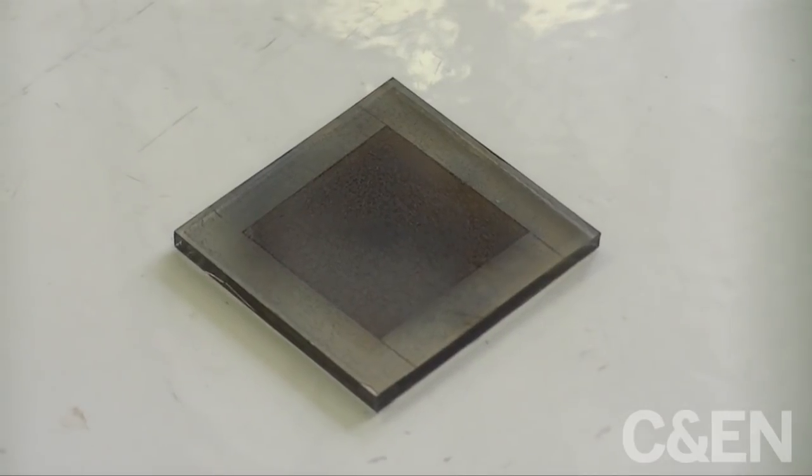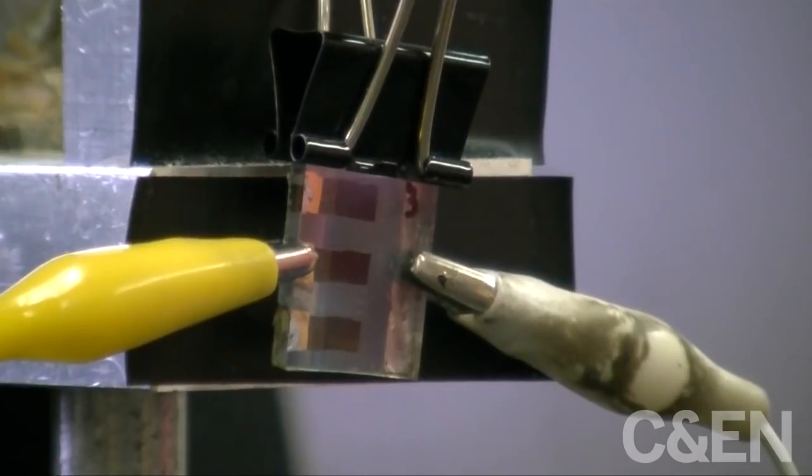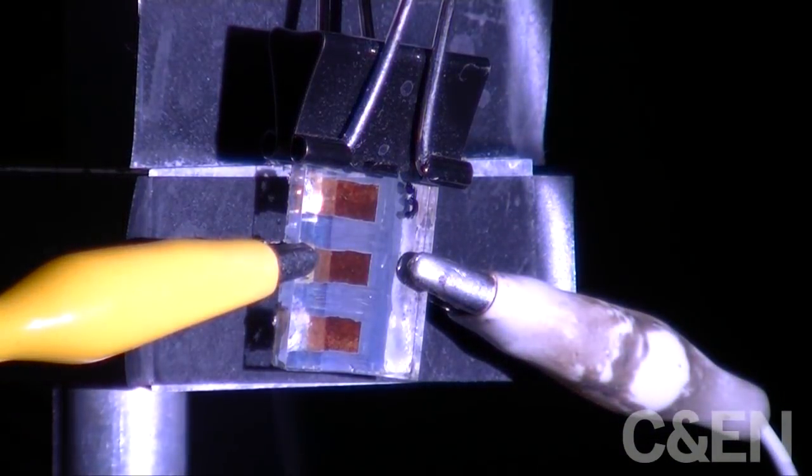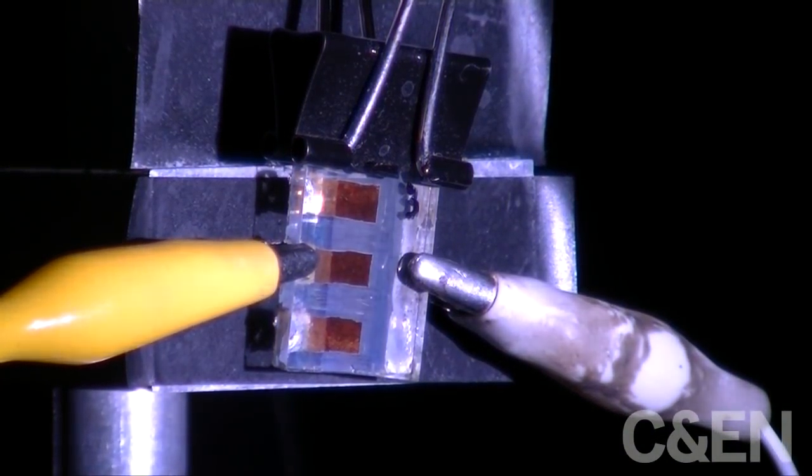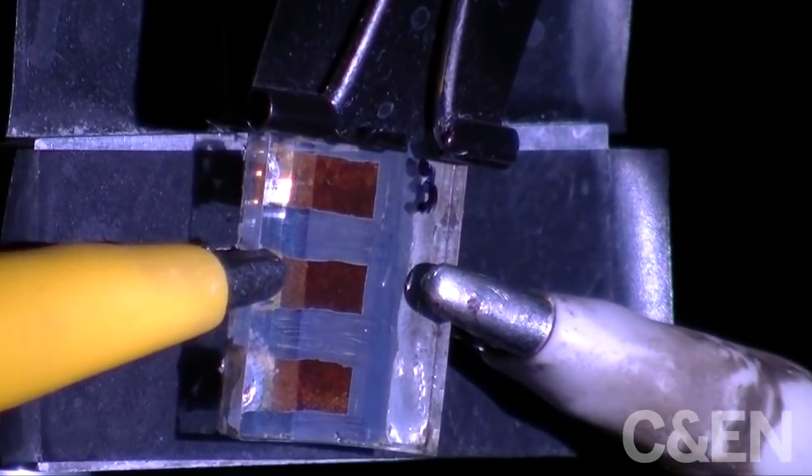After completing a few more steps, the device is ready for testing. Hook it up, turn on a solar simulator, such as a laboratory xenon lamp, and voila—this little device transforms light energy to electricity.